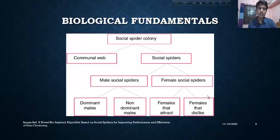At the top of the tree we have the social spider colony. It is divided into communal web and social spider. The social spider can be two types: male and female. The male can be two types: dominant and non-dominant. And the female can be those that attract or those that dislike.